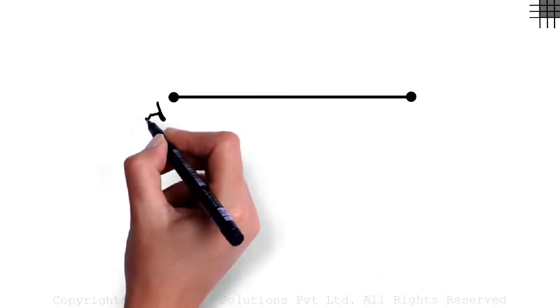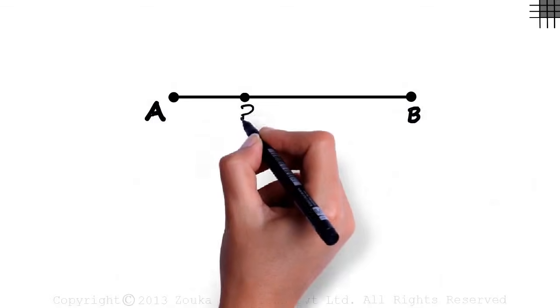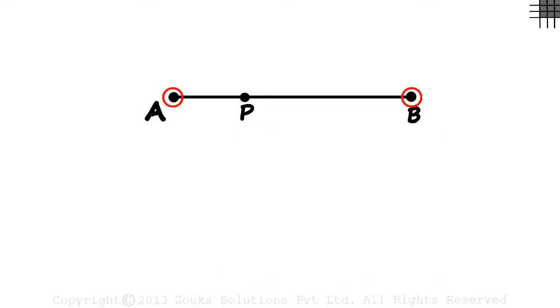Consider the line segment AB and a point P somewhere in between the endpoints. Here, point P is slightly closer to A. Doesn't matter where it lies on the segment.